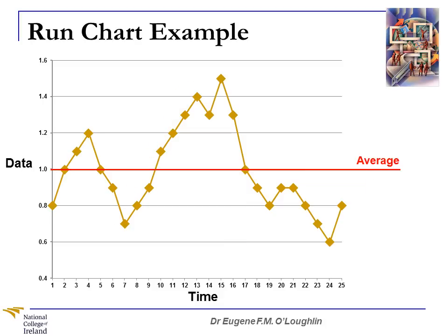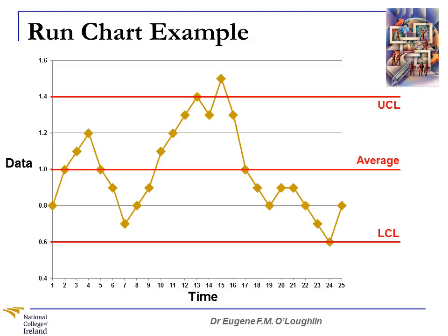Another thing we can do with our run chart is impose upper and lower control limits. We have a UCL — upper control limit — where any values above that indicate a serious problem with the process. We also have an LCL — lower control limit — where any values below that also indicate a serious problem. With this particular process, the run chart shows one value on the upper control limit and a single value above it, which is a serious problem. One value is also exactly on the lower control limit — further strong indicators of a serious problem.